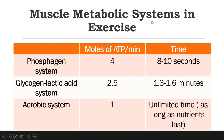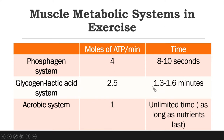Looking at the three metabolic systems divided by three columns: the phosphagen system produces 4 moles of ATP per minute; the glycogen-lactic acid system produces 2.5 moles of ATP per minute; and the aerobic system produces mostly 1 mole of ATP per minute. So the phosphagen system produces the most energy compared to the others. However, looking at the third column, the phosphagen system can only be used for short durations — 8 to 10 seconds. The glycogen-lactic acid system can be used for approximately 1.3 to 1.6 minutes, and the aerobic system can be used for unlimited time, as long as the nutrients last.